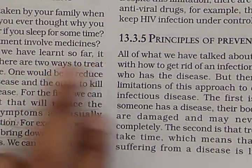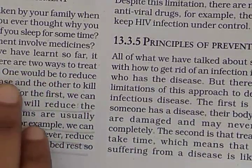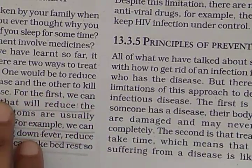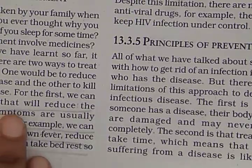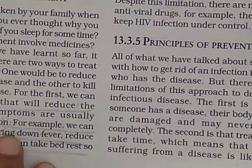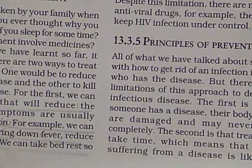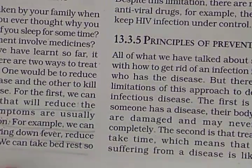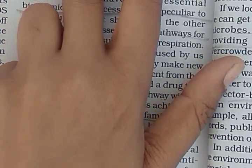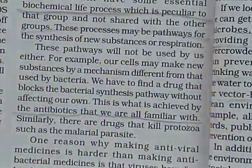Based on what we have learnt so far, it would appear that there are two ways to treat an infectious disease. One would be to reduce the impact of the disease, and the other to kill the cause of the disease. For the first, we can provide treatment that will reduce the symptoms. The symptoms are usually because of inflammation. For example, we can take medicines that bring down fever, reduce pain, and control loose motion. We can also take bed rest so that we can conserve our energy, which will enable us to focus more on healing.